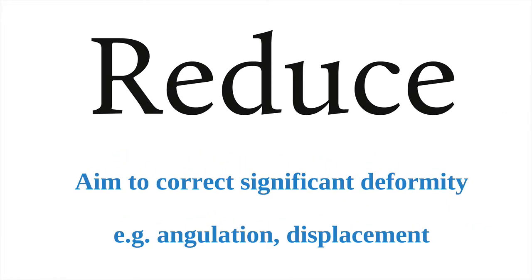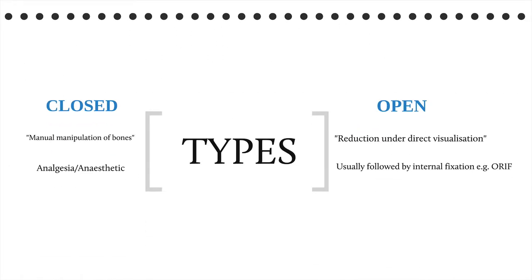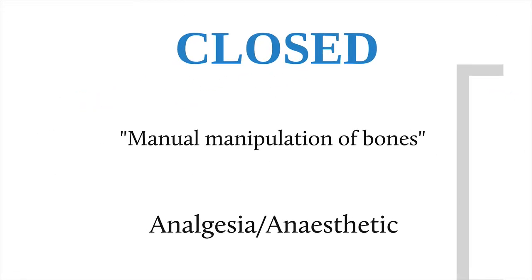Reduce. Fractures may need reducing to correct deformity in the bone. In some cases, fractures may not need reducing if there is minimal malalignment, or if the malalignment will not affect healing or the return of function. Some angulations will correct themselves completely through remodelling, particularly in younger children. Reduction may be achieved by closed reduction using manual manipulation of the bones, done with analgesia in the emergency department or under anaesthesia in the operating theatre. Mechanical traction may be required if the surrounding muscles of the fracture are particularly strong, for example, the femur or the cervical spine.